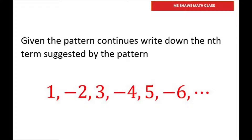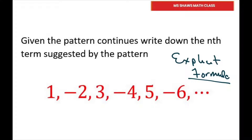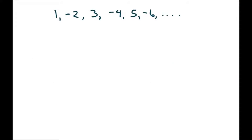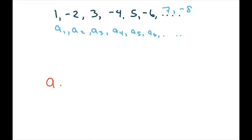Hey everyone, if the pattern continues we need to write down the nth term suggested by this pattern. We're trying to find the explicit formula. What we're going to do, like we did in the previous videos, is label this as a sub 1, a sub 2, a sub 3, a sub 4, a sub 5, and a sub 6, and so forth. So we know the next number would be 7, negative 8. We see the pattern, but how do we write the nth term?